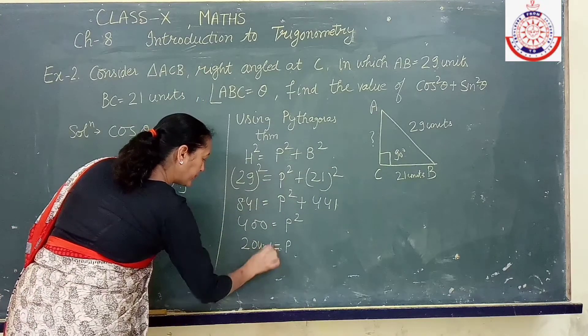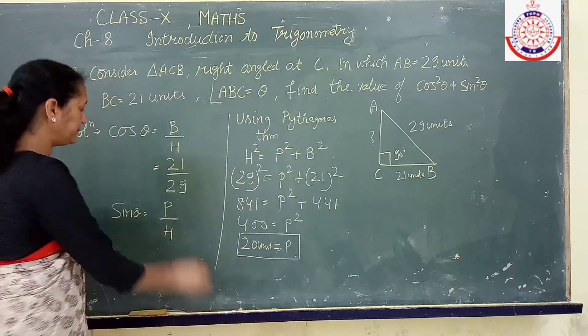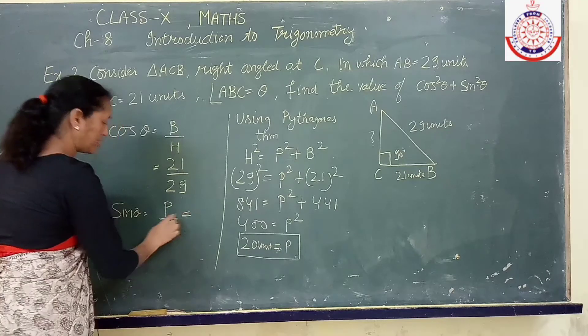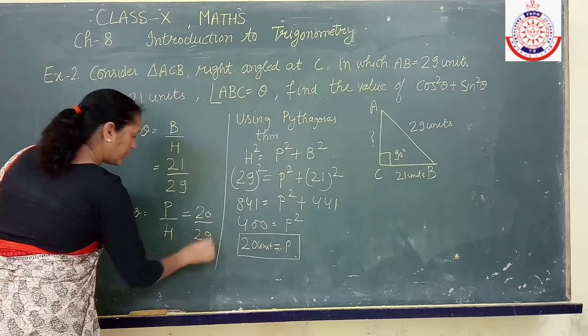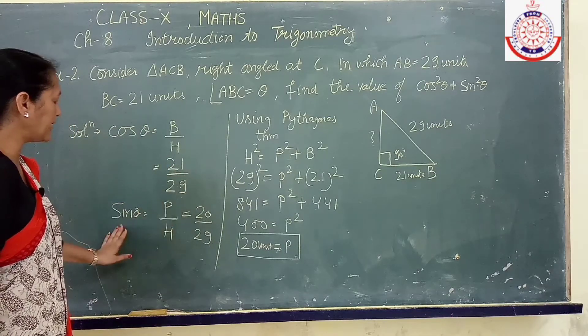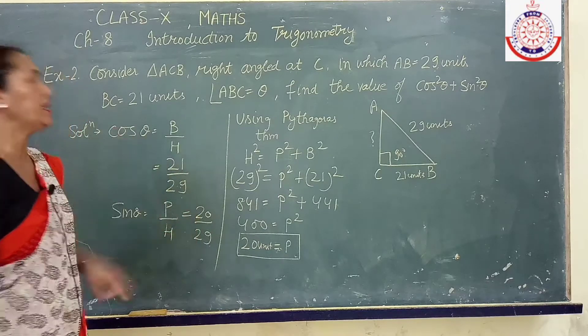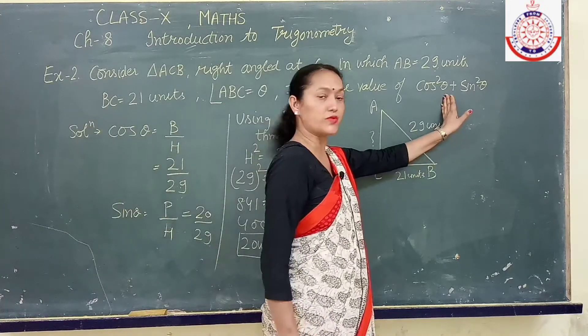Now we have obtained the value of perpendicular, now we can fill here and can get the value of sine theta. Perpendicular 20 and hypotenuse is 29, so we have obtained cos theta as 21 upon 29 and sine theta as 20 upon 29. But our question says find out cos square theta plus sine square theta.